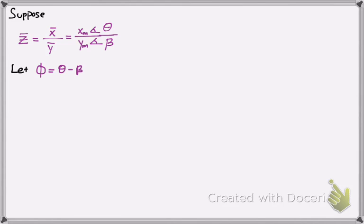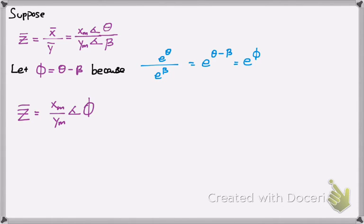And the reason why is because if you notice theta and beta is e to the j theta or e to the j beta. So when you're dividing the exponents there, you're actually subtracting, and that will just give you phi there. So that is why we can write the equation like this. And that is phasor form.